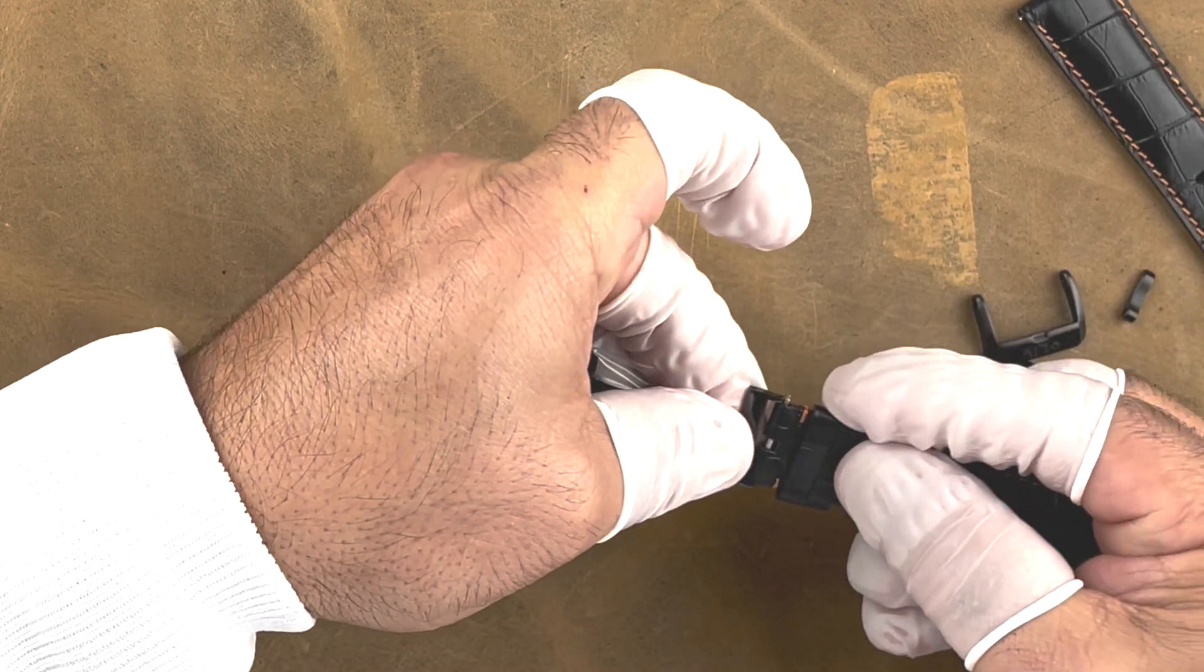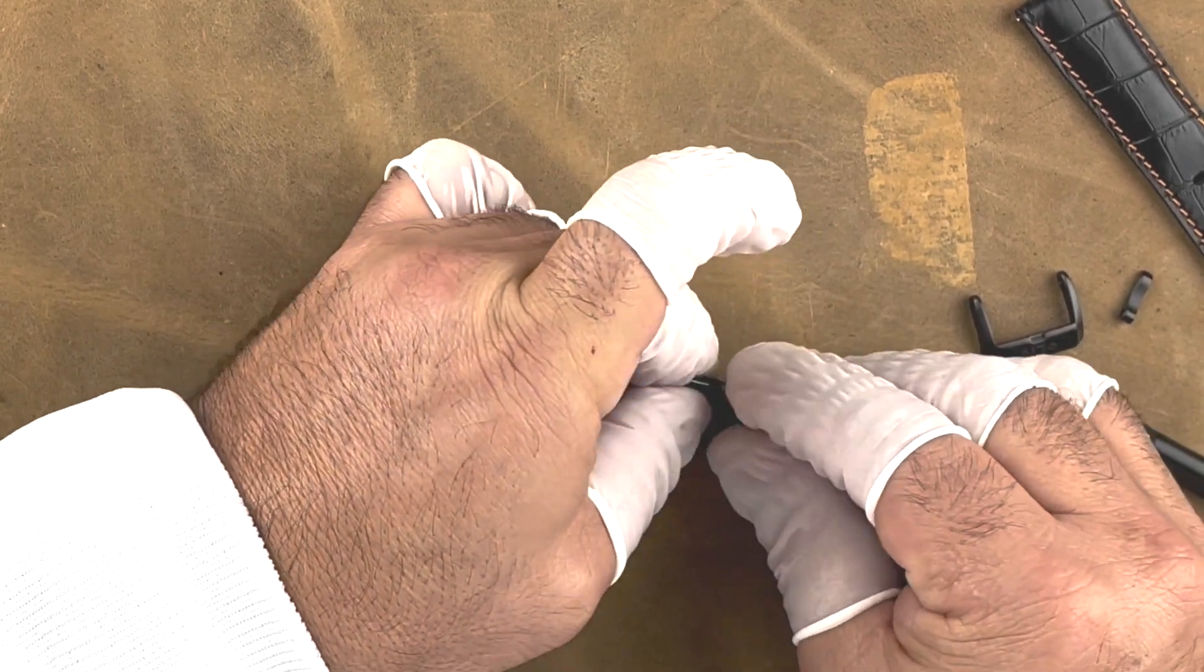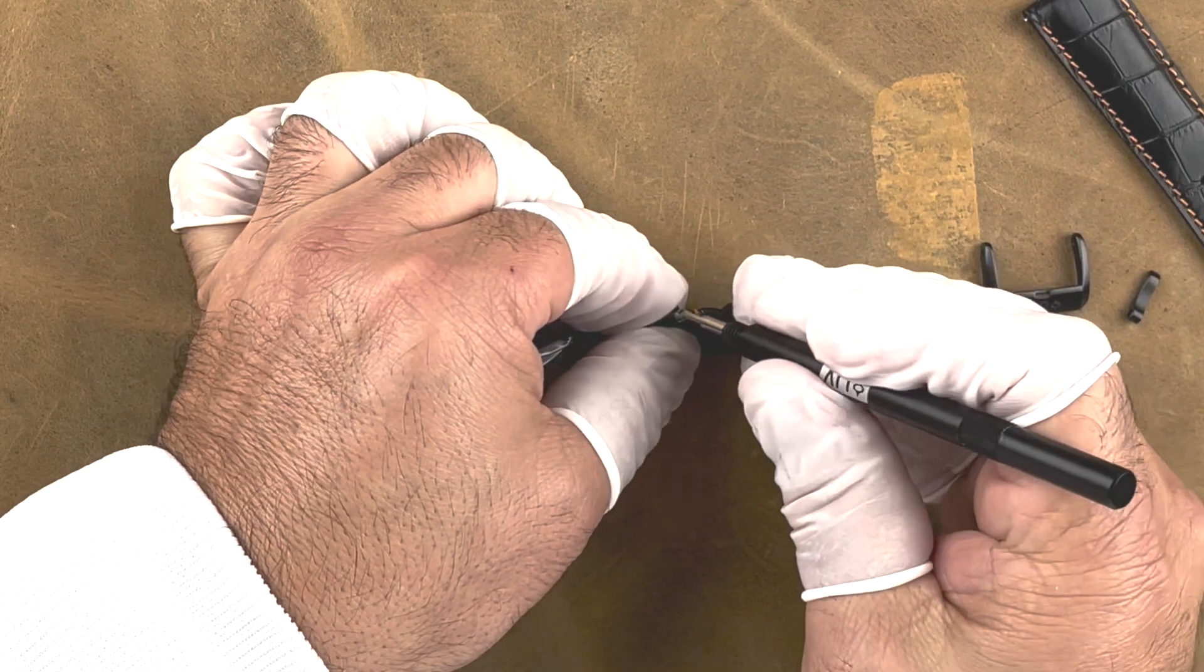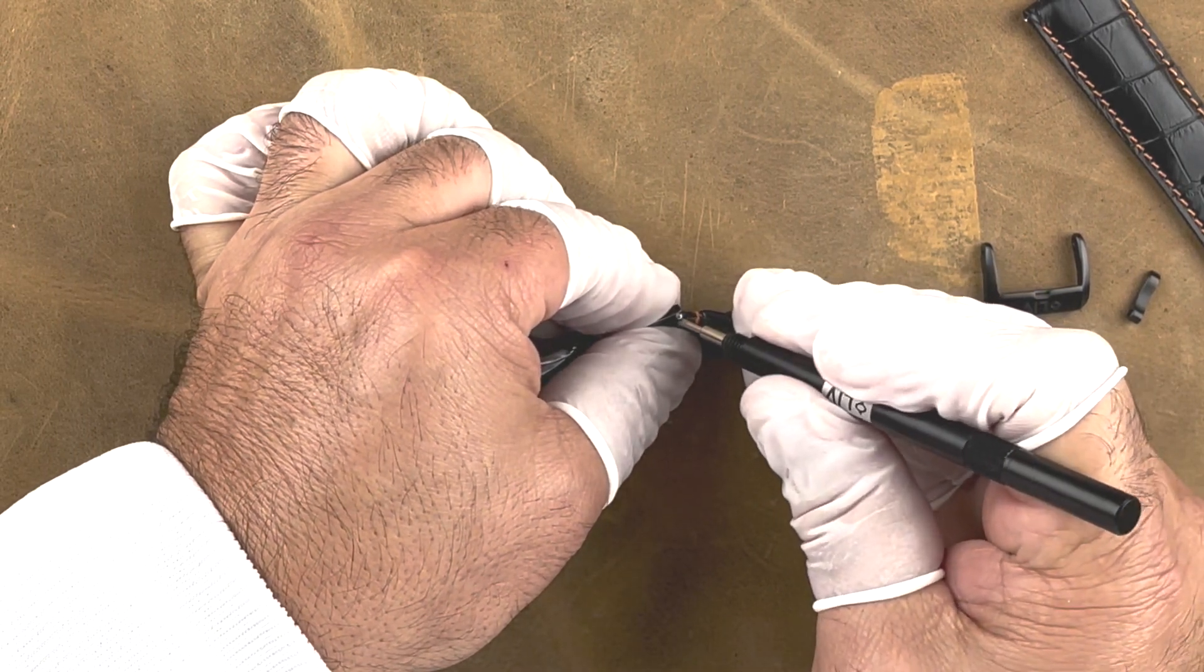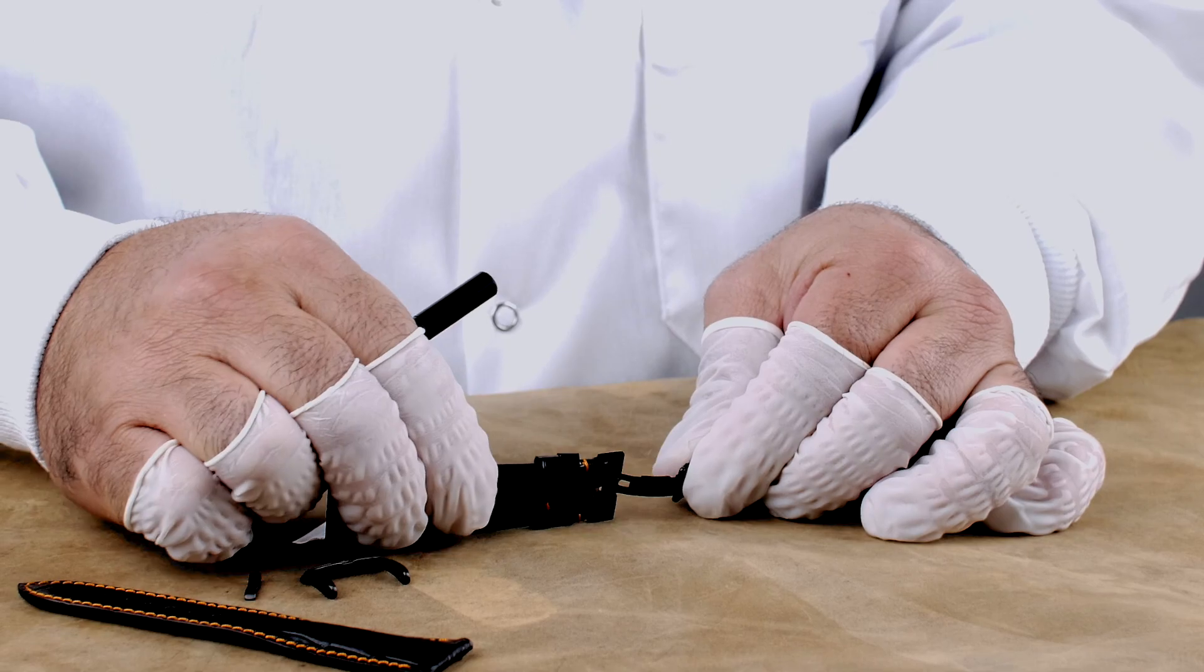Put one side of the spring bar into the bottom of the deployant clasp, using the tool to push the top side of it inside until you hear a click and making sure it's secure.